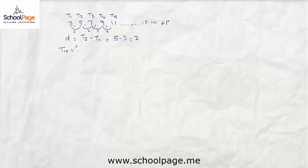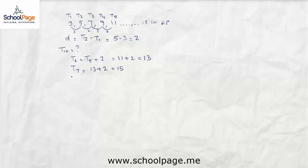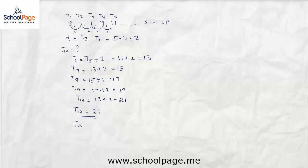Now let us find the 10th term of this arithmetic progression. To find the sixth term, we look at the preceding term t5 and add the common difference 2: 11 plus 2 equals 13. t7 equals 13 plus 2 equals 15. t8 equals 15 plus 2 equals 17. t9 equals 17 plus 2 equals 19. And t10 equals 19 plus 2 equals 21. We have found the 10th term as 21. However, finding the 100th term this way is very difficult and prone to error.